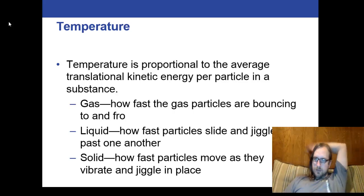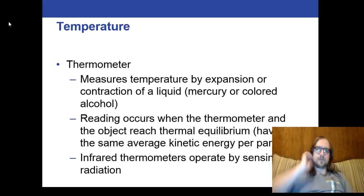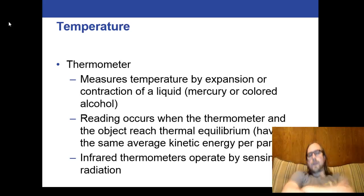Gas particles are bouncing around, liquid particles are sliding across each other, and solid particles have this vibration. The way a thermometer works, we use thermometers to measure temperature. The modern thermometer that uses mercury in it works by expansion and contraction, because the density of substances is dependent on temperature. Since the mass isn't changing, the volume changes. As it gets hotter, it expands. As it gets cooler, it contracts.